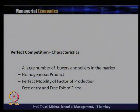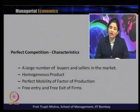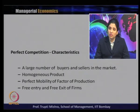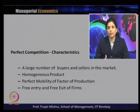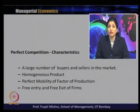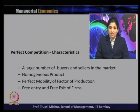The first and foremost characteristic of a perfect competitive market is that there are large numbers of buyers and sellers. There are many firms producing the product and many consumers to buy it. There are large numbers of buyers and sellers, and also large numbers of producers, which leads to the large number of sellers in the market.